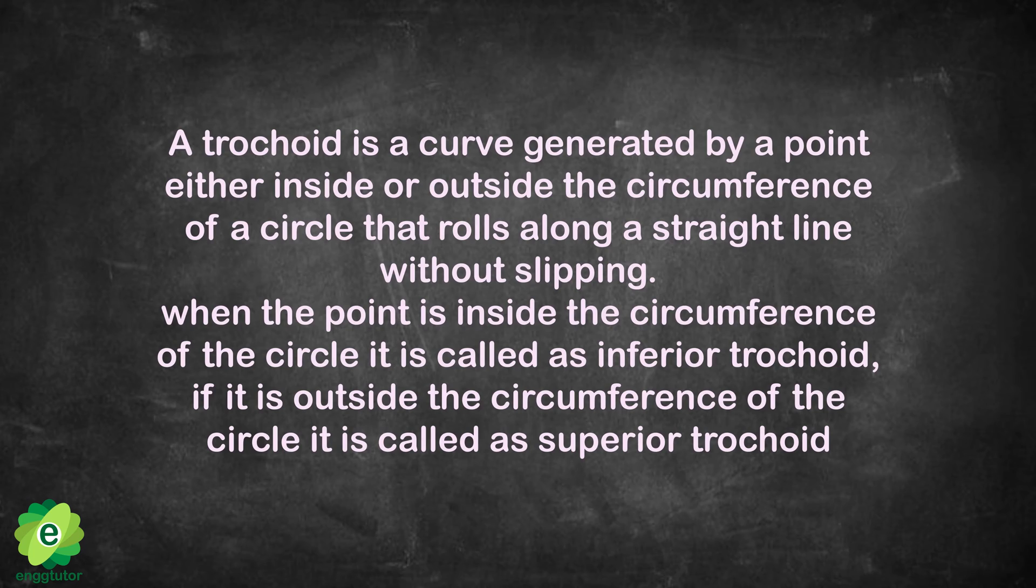When the point is inside the circumference of the circle, it is called an inferior trochoid. If it is outside the circumference of the circle, it is called a superior trochoid.